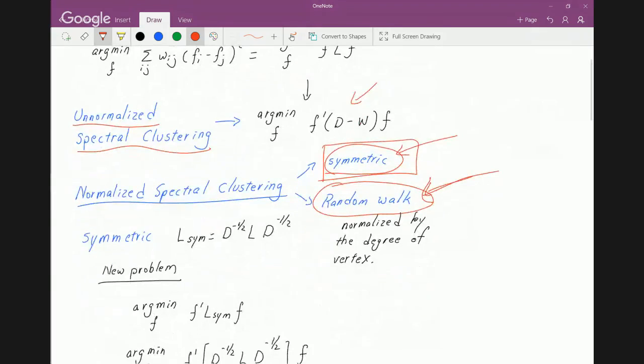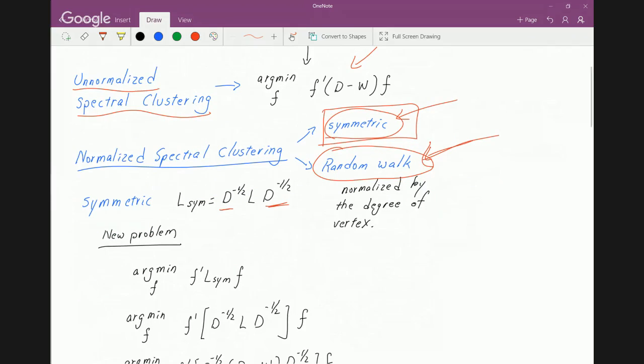The idea is very simple. Normally, we use this Laplacian, and we just want to normalize it by dividing by the degree matrix, and that's it. And the new formulation looks like this.